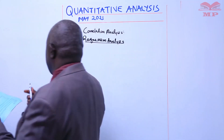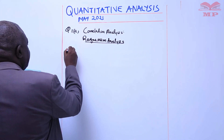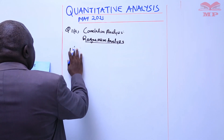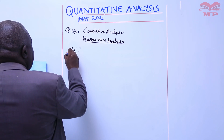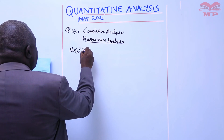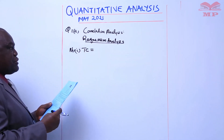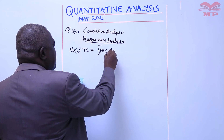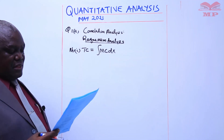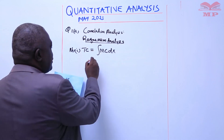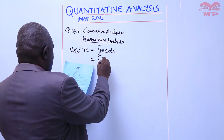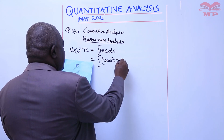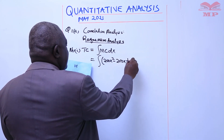Now, for question 1b Roman (i), total cost — abbreviated TC — can only be obtained by integrating the marginal cost. So total cost is the integral of marginal cost with respect to the variable x. Marginal cost is 200x squared minus 200x plus 400, so we integrate that with respect to dx.